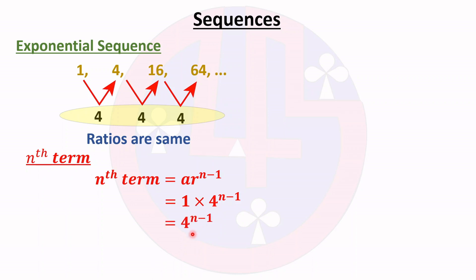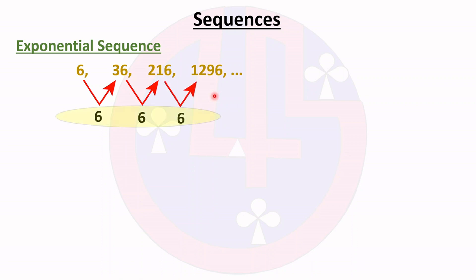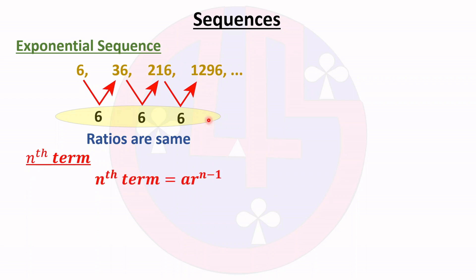Another example is 6, 36, 216, and 1296. Finding the ratio: 36 divided by 6 is 6, 216 divided by 36 is 6, and 1296 divided by 216 is 6. All ratios are the same, so this is an exponential sequence. Using the nth term formula a·r^(n-1), where a equals 6 and r equals 6, we substitute to get 6 times 6^(n-1).